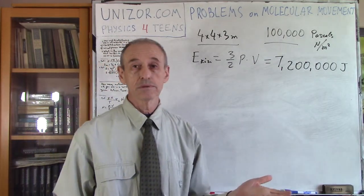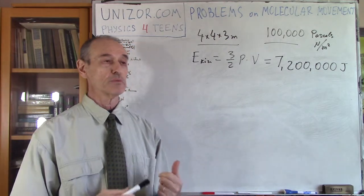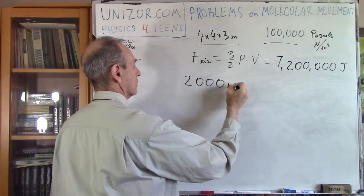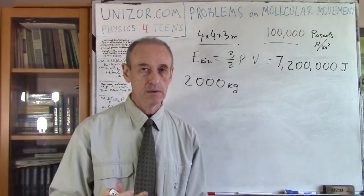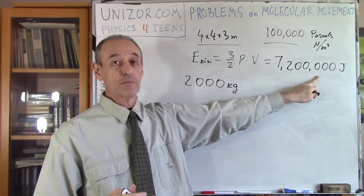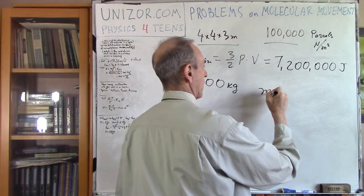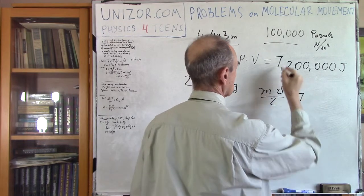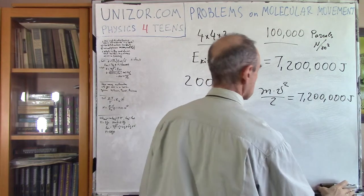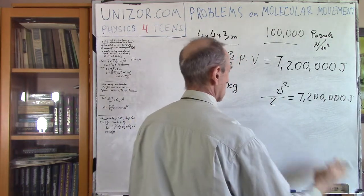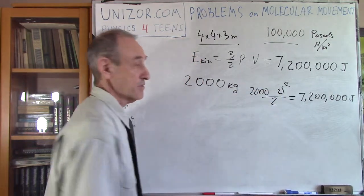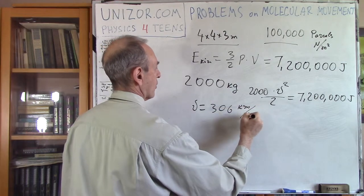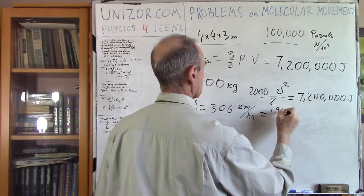Is it a lot? Let's consider the second half of this problem. Consider you have an average car which weighs, let's say, 2,000 kg. What should be the speed of this car for this car to have this kinetic energy? So you have mass of the car, square of the speed divided by 2, that's kinetic energy, and it's equal to this 7,200,000 joules. And instead of M, I will put 2,000 kg. What is the V? What is the speed? Well, my calculations show that the V is supposed to be 306 km per hour, which is about 190 miles per hour.